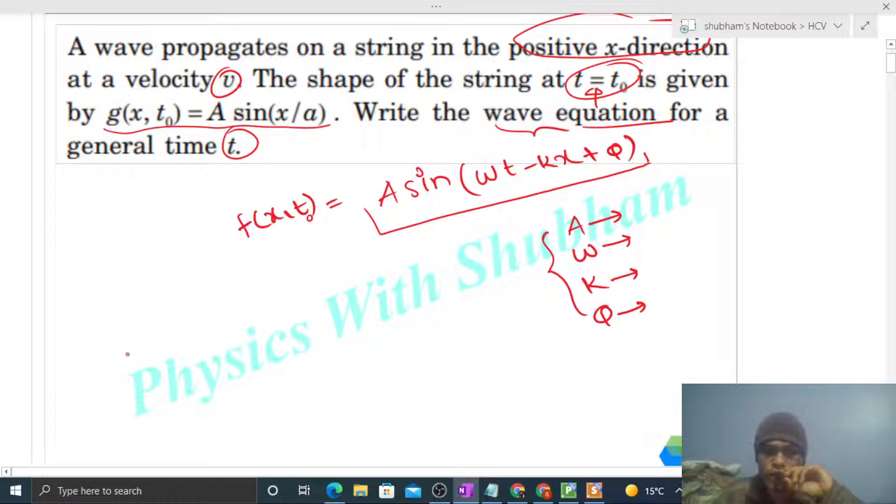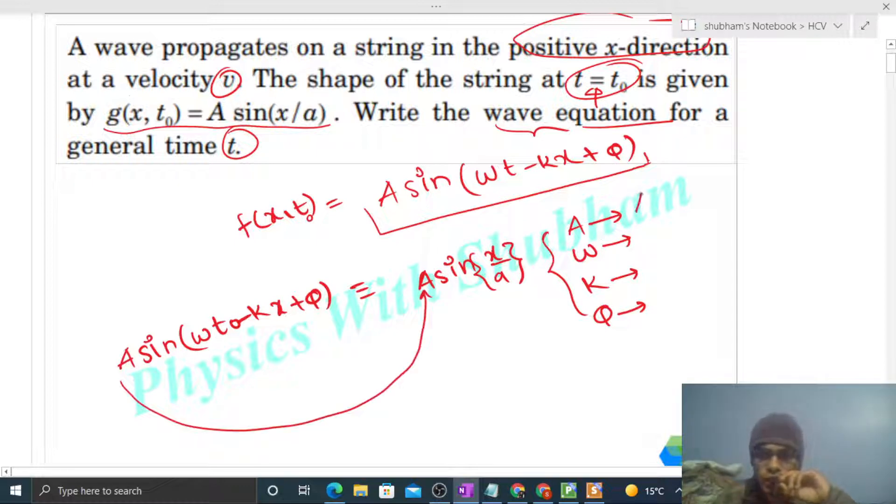Then the equation becomes A sin(ωt₀ - kx + φ). This equation is directly given as A sin(x/a). So we can compare: amplitude A is given as A. Now the coefficient of x is -k, which is given as 1/a. So k equals minus 1/a.